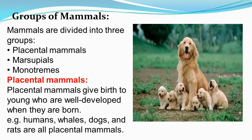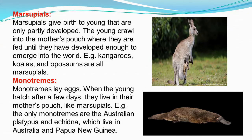The second group is marsupials. Marsupials also give birth to their young ones, but the babies are very premature and weak. That is why they live in their mother's pouch, where they grow up. The mother has a pouch with mammary glands which also help feed milk to the young ones. The babies don't come out until they are completely developed.